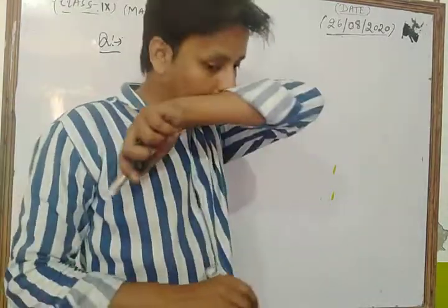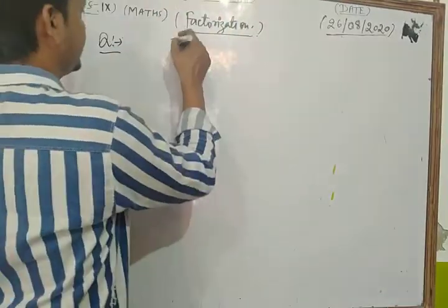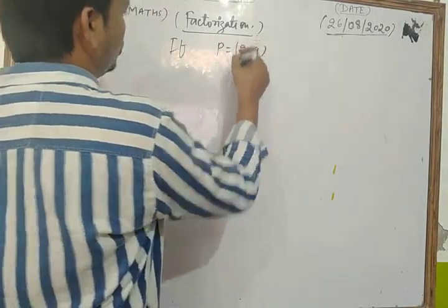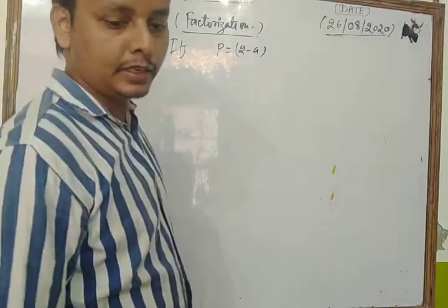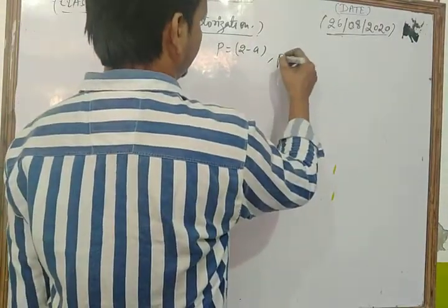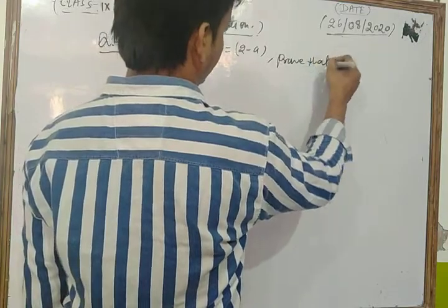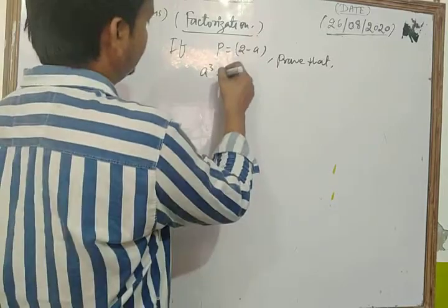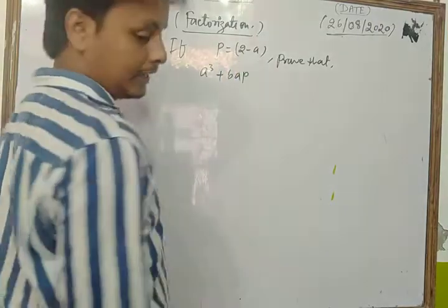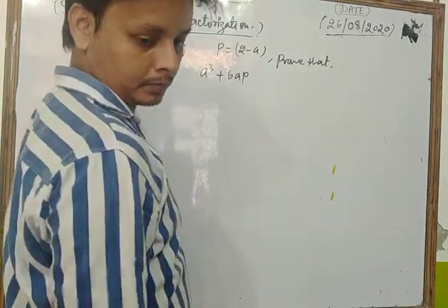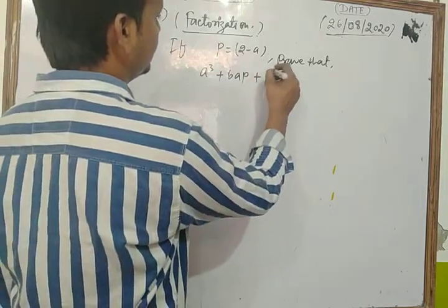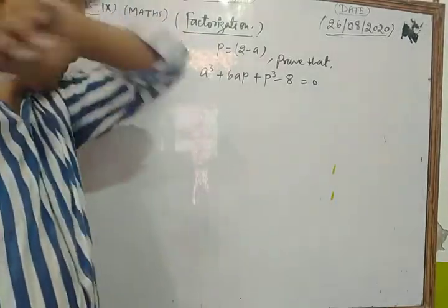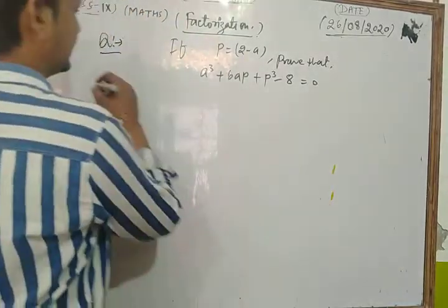Next question: if p = 2 - a, then prove that a³ + 6ap + p³ - 8 = 0. From the given relation p = 2 - a, we rearrange to get a + p - 2 = 0. This is equation (1).